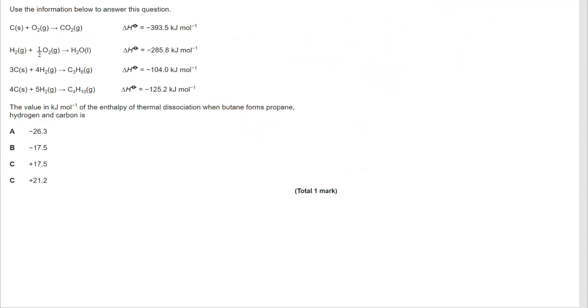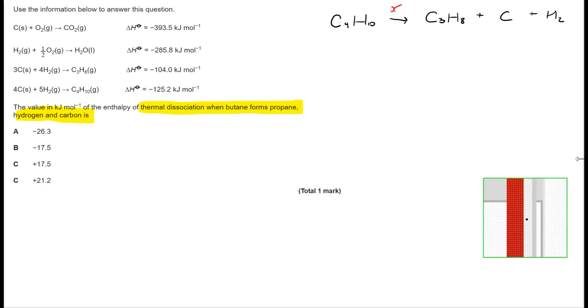Next question. So once again we're given a range of energetics data and we are going to have to build a cycle from them. We're told that butane forms propane, hydrogen and carbon and we want the enthalpy change for that. So there's my start point for this particular reaction.